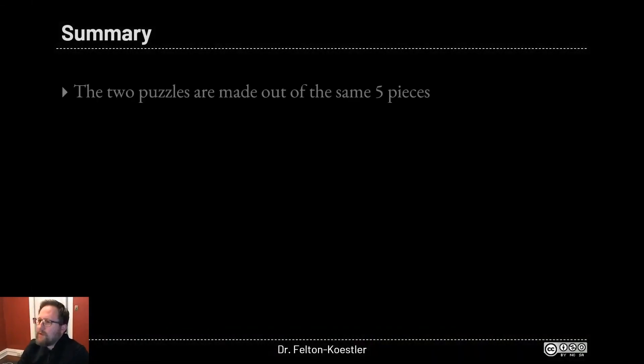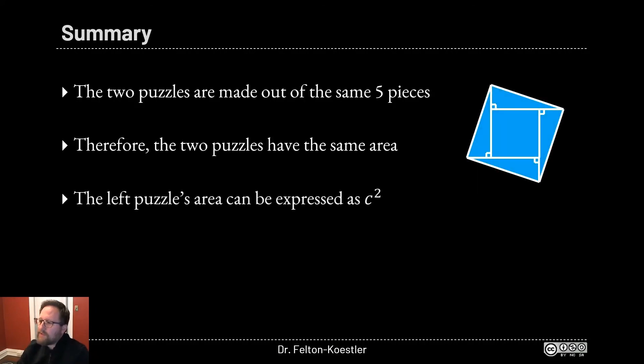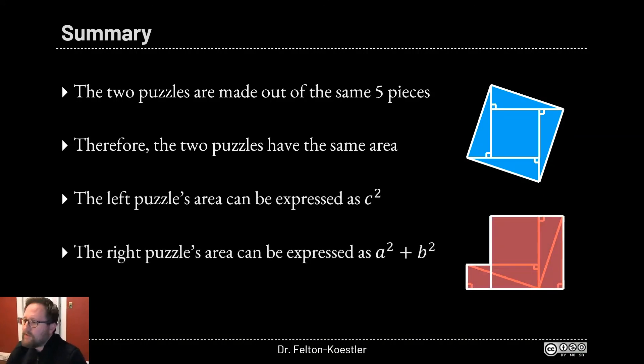So to summarize, the two puzzles are made out of the same five pieces therefore they have to have the same area. The left puzzle's area can be expressed as c squared. The right puzzle's area can be expressed as a squared plus b squared. And therefore c squared equals a squared plus b squared which is the theorem that we all learned in school. Again these are just two different ways of saying the same thing or of counting the same amount of area.